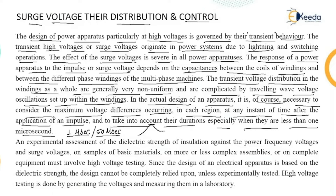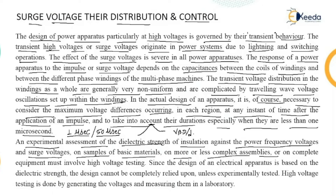These time periods are defined by standards, such as 1µs/50µs or 1.2µs/50µs. Dielectric strength means the breakdown voltage per unit distance. An experimental assessment of the dielectric strength of insulation against power frequency voltages and surge voltages — on samples of basic materials, complex assemblies, or complete equipment — must involve high voltage testing.